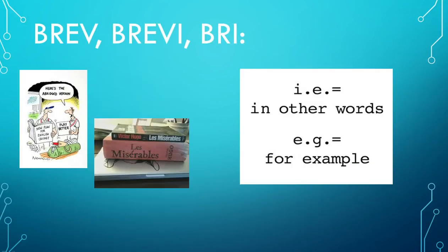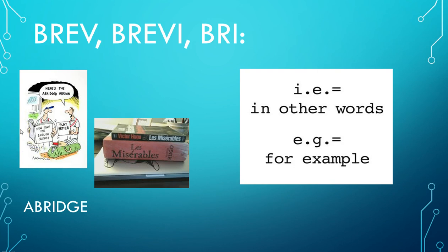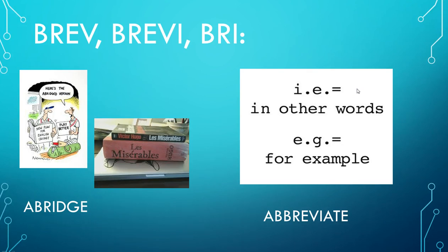Your next root is brev, brevi, or brie. Our first example word is abridged. If you look at two versions of Les Misérables, the original version is very, very long, and most people choose the abridged version, which is considerably shorter. The second word is abbreviate — for instance, i.e. is an abbreviation for 'in other words,' and e.g. is an abbreviation for 'example.' So brev means short — you'll see this root in words about shortening something or something that is very short.